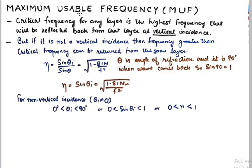For any non-vertical incidence, theta I must lie between 0 to 90 degrees. So sine theta I will lie between 0 and 1, so our eta will also lie between 0 and 1.